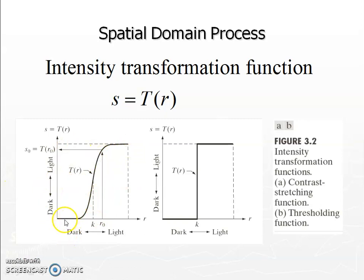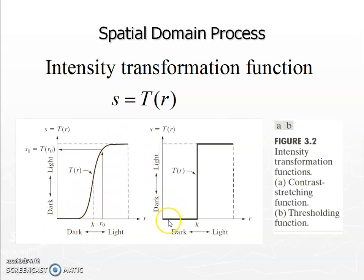Contrast enhancement typically uses a non-linear curve, and we generally approximate it with a piecewise linear function. An extreme case is thresholding, where if the intensity value at a given location is greater than k, the output is set to 255; otherwise it is set to 0 in the output image.